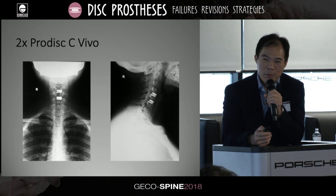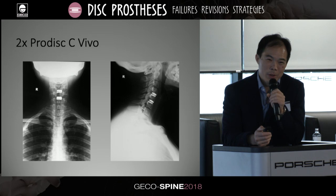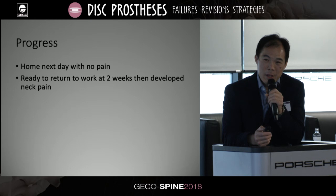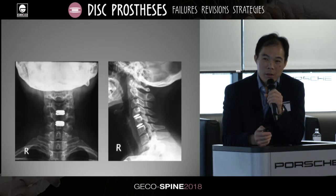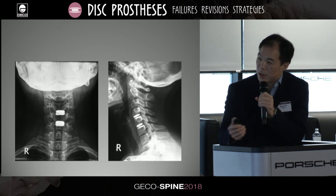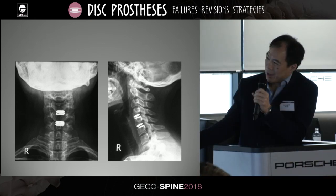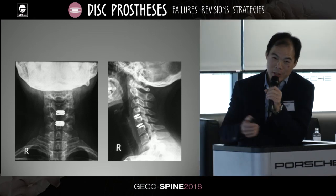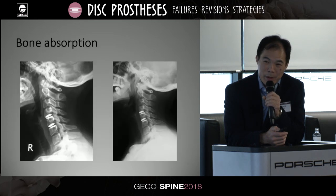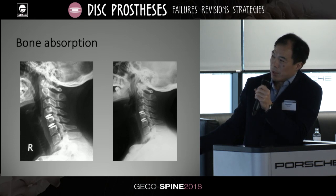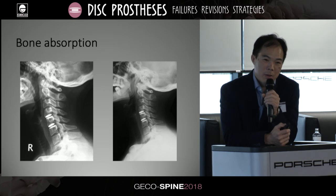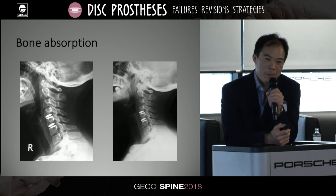She did well initially, went back to work within two weeks, but at about six weeks started complaining of neck pain, which was unusual. On her initial X-ray, you can see some residual anterior osteophyte covering the front of the prosthesis. By the second follow-up at about six weeks, the bone was starting to absorb — the anterior part was absorbing. She was also complaining of swallowing problems and general discomfort in the neck region.